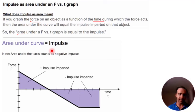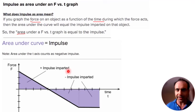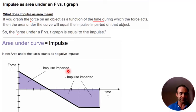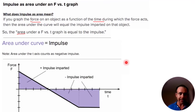The word 'imparted' just means it was pushed or provided by an external object. Anything above the x-axis is going to be positive and anything underneath the x-axis is going to be negative.